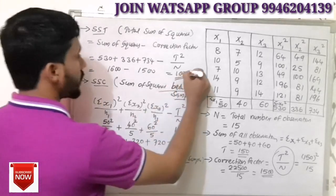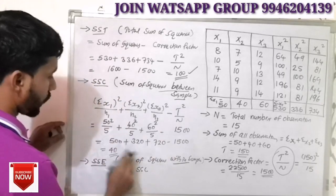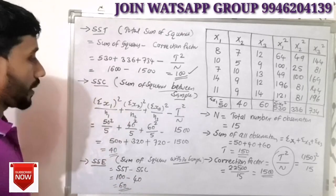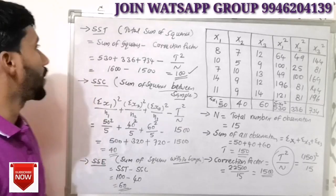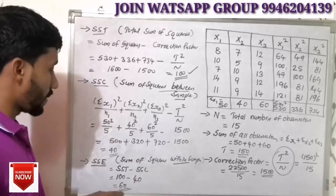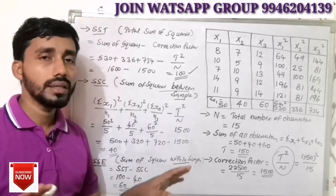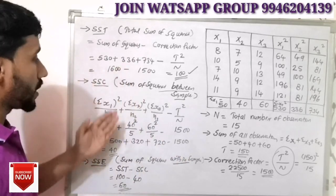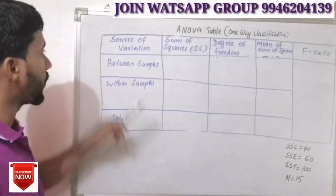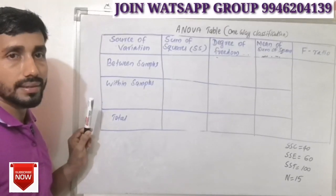SST equals 100. SSC equals 40. Therefore SSE equals SST minus SSC, which is 100 minus 40, giving SSE equals 60. We now set up the one-way classification ANOVA table with column headings: between-sample and within-sample, sum of squares (SS), degree of freedom (DF), mean sum of squares (MSS), and F ratio.